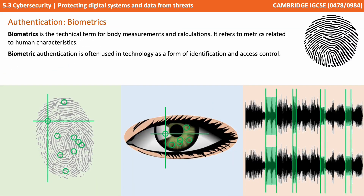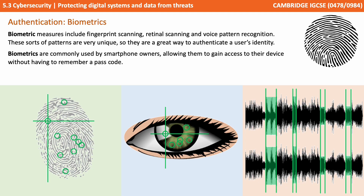Another form of authentication becoming increasingly popular is the use of biometrics. This is the technical term for body measurements and calculations, and it refers to metrics related to human characteristics. Biometric authentication is often used in technology as a form of identification and access control. Biometric measures include fingerprint scanning, retinal scanning and voice pattern recognition. These patterns are very unique, so they're a great way to authenticate a user's identity. They're commonly used by smartphone owners, allowing them to gain access to their device without having to remember a passcode.